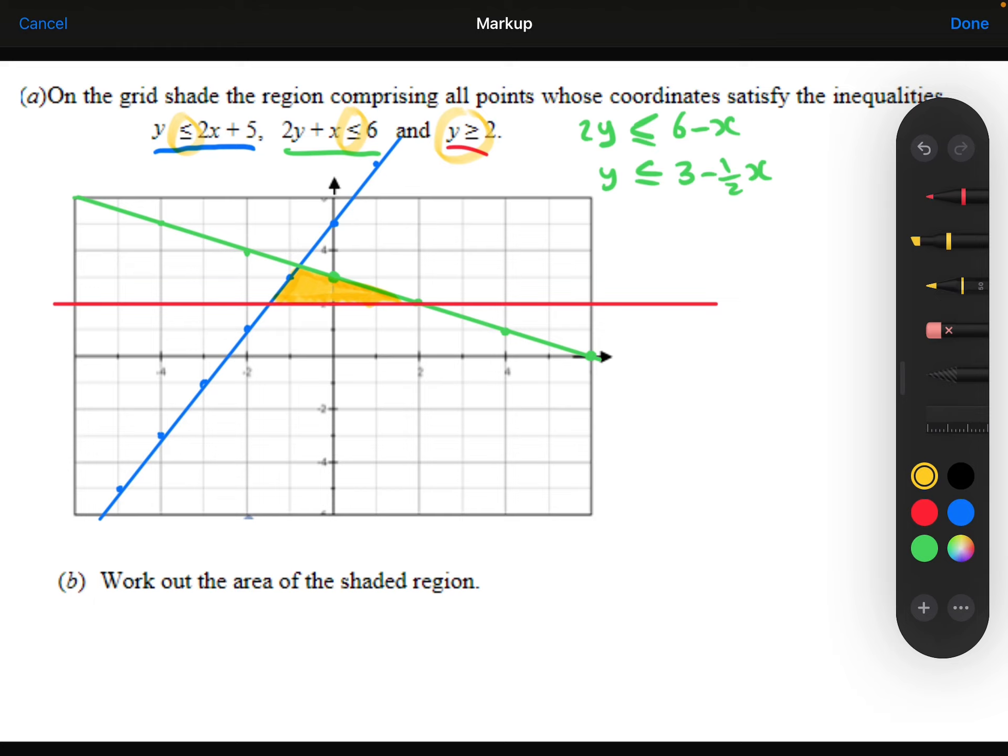And then part b, we need to work out the area of this triangle. So to work out its area, I'd like to know what its base is, and then what its perpendicular height is.